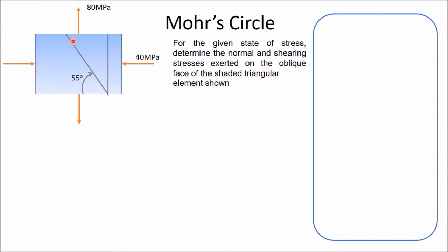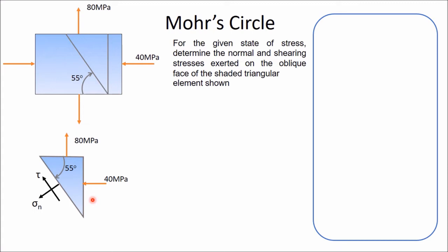In this triangular element, we have to determine normal stress and shear stress on this particular plane. Draw a free body diagram of this triangular element, which is subjected to one normal stress of 40 MPa on the X plane and 80 MPa tensile stress on the Y plane. That stress can be resolved into two components: one perpendicular to the surface, represented as normal stress, and one tangential to the surface, represented as shear stress. You have to determine sigma n and tau in this particular problem.